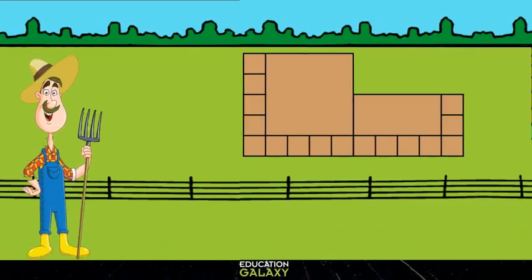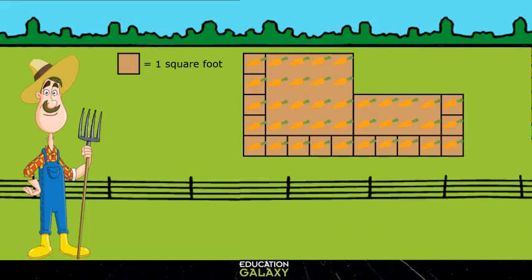Here, I grow carrots. Each square represents 1 square foot. To calculate the area of the first rectangle, I would multiply the base times the height. So it would be 5 times 5. That's 25.